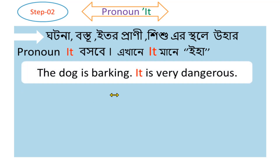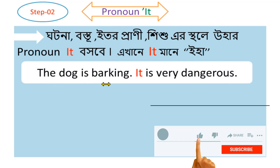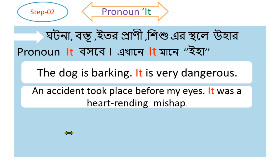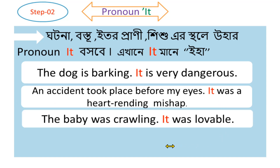Now 'it' as a pronoun. Example: 'The dog is barking; it is very dangerous.' Here 'it' is a pronoun referring to the dog. Another example: 'An accident took place before my eyes; the accident was a heart-rending mishap — it was a pronoun.' Another example: 'The baby was crawling; it was lovable.' Here 'it' refers back to the baby.